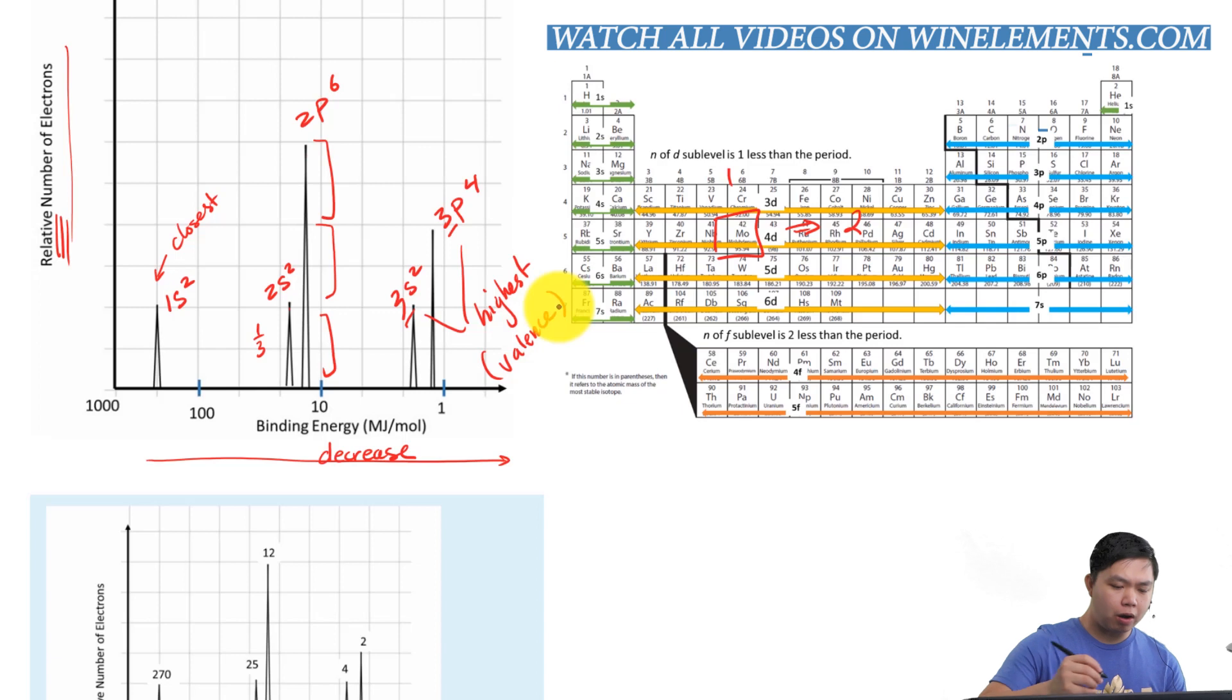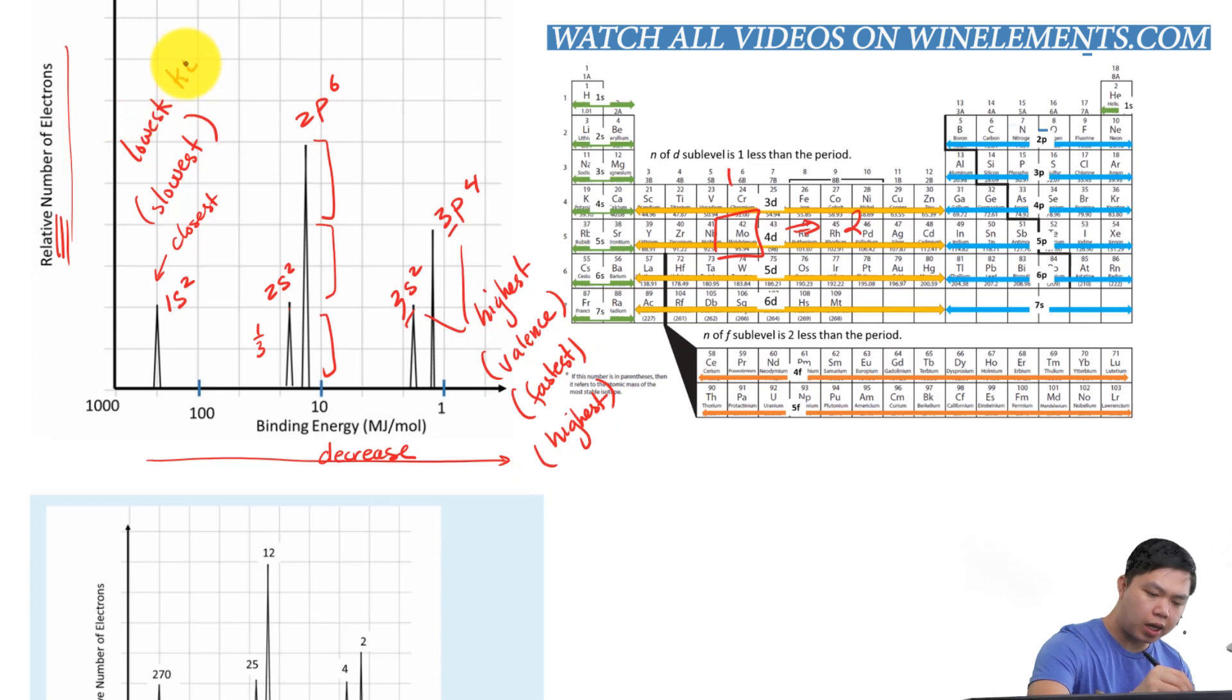What else can we learn about this graph? Well, if this is the closest, this is also the slowest. Or also, if that's the slowest, this one must also be the fastest. Or, in terms of kinetic energy, this would be the highest kinetic energy. And this would be the lowest kinetic energy. I'm going to put KE just in there, just in case.